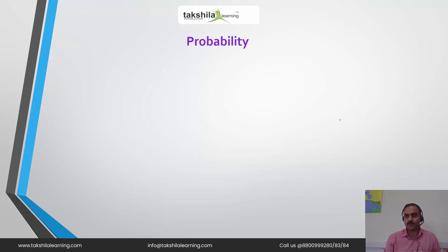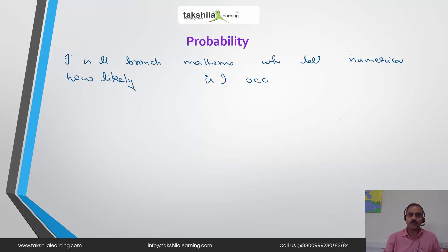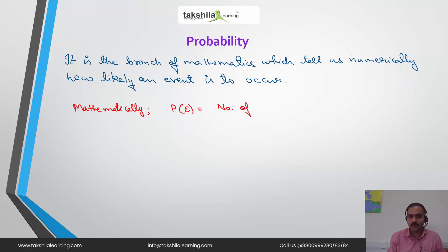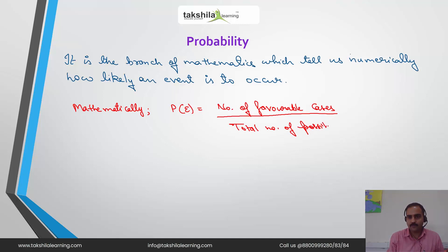Now let us discuss in detail about probability. What is probability? Basically, probability is the branch of mathematics which tells us numerically how likely an event is going to occur. Mathematically, the probability of an event occurring is equal to the number of favorable cases over the total number of possible cases. This is the formula, and probability is always denoted by a small letter p, and we know that probability always lies between 0 and 1.